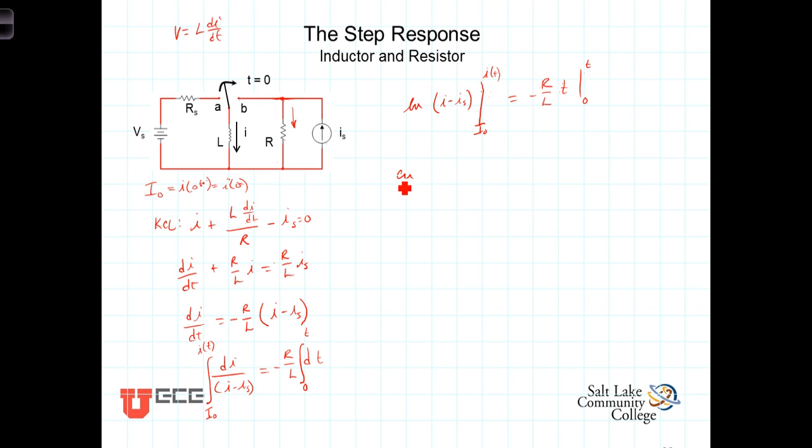Evaluating the left-hand side of the limits, we get then the natural log of (I(t) minus Is), minus this evaluated at the lower limit, or the natural log of (I naught minus Is), is equal to simply negative R over L times t.